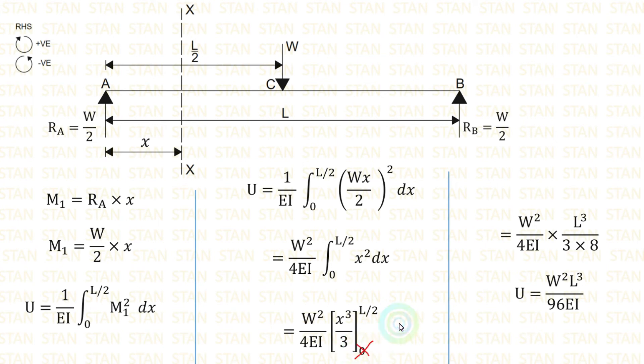No need to apply the lower limit 0 because the whole term will become 0. Only apply the upper limit. When we apply L by 2 for X, we will get L cube by 8. Finally, we are getting U equals W square L power 3 by 96EI.